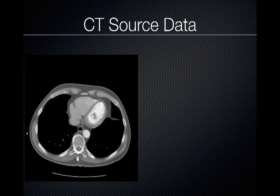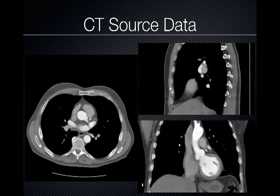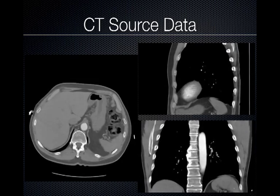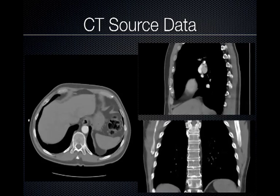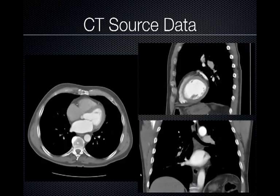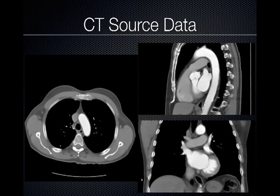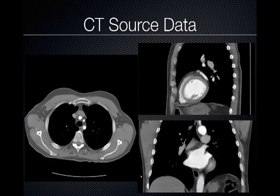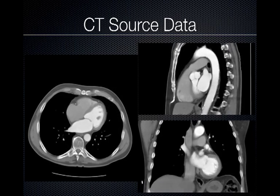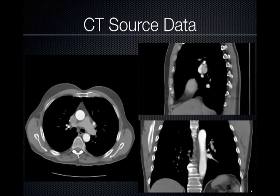Here's our CT dataset. We have axial CT images as well as coronal and sagittal images. I find the sagittal dataset the best to evaluate pulmonary vein anatomy. If I have questions, I use the axial and coronals to correlate with the sagittal dataset to clearly define the anatomy.